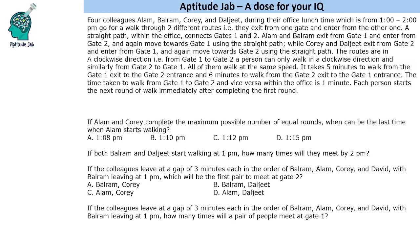Hello everyone. Welcome to Aptitude Jab. This set says that there are four colleagues: Alam, Balram, Kory, and Daljit. During their office lunchtime from 1 to 2 pm, they go for a walk through two different routes. They exit from one gate and enter from the other one. There is a straight path within the office that connects gates 1 and 2.